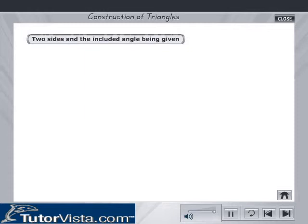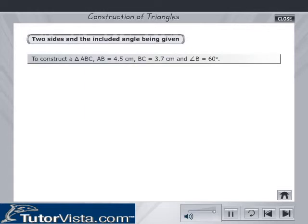Two sides and the included angle being given. We are required to construct a triangle ABC with AB is equal to 4.5 cm, BC is equal to 3.7 cm and angle B is equal to 60 degrees. Proceed as follows.